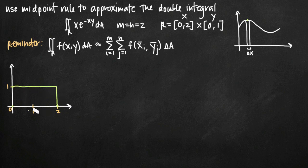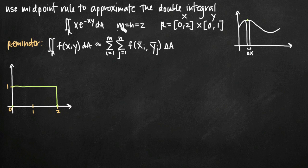Our volume sits on top of this rectangle and below the function defined in terms of x and y. We draw our rectangle, and then the next step is to divide this rectangle into some number of smaller rectangles. We know how to divide it up from the given information that m equals n equals 2, meaning we divide our rectangle into two by two — in other words, four smaller rectangles.